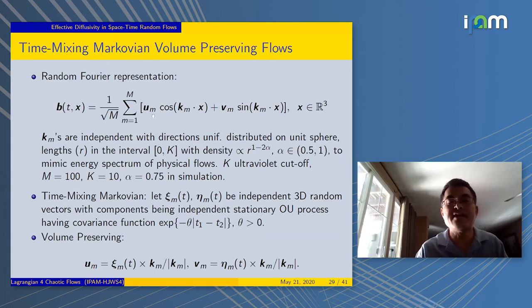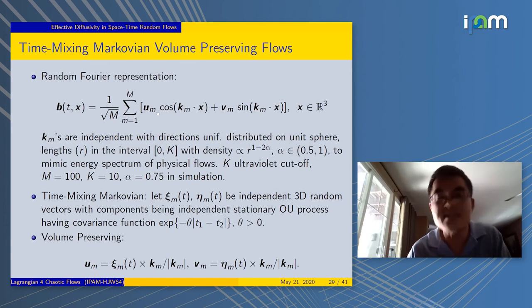This is the spatial part. You want to have some random vector pointing in uniformly distributed directions with certain magnitude. The u_m and k_m have to be defined. The u_m is defined in the following way. It has to preserve the volume. So it's k cross c_m, which is time dependent. What is c_m? That's independent Ornstein-Uhlenbeck process. It's Markov with Gaussian with covariance function given here.